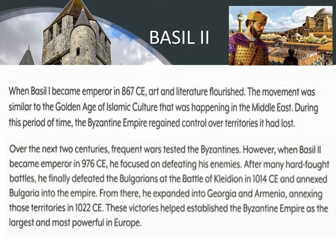From there, Basil II started expanding to Georgia and Armenia — present-day Georgia is just the neighboring country of Russia — annexing those territories in 1022 CE. These victories helped establish the Byzantine Empire as the largest and most powerful in Europe. So here you can see the good work done by Basil II in making the Byzantine Empire the most powerful empire in Europe.